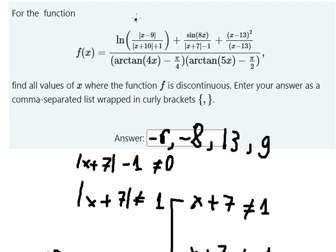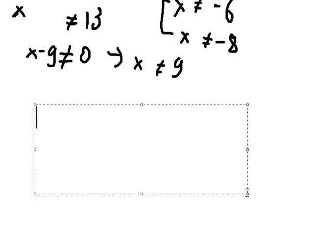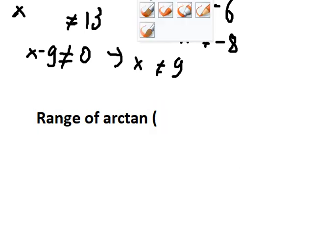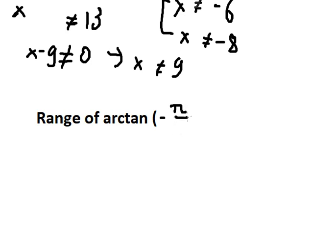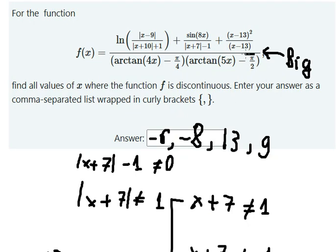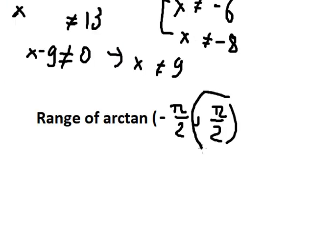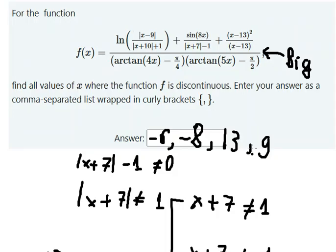The next one is a big fraction, so we cannot divide by zero either here or in the denominator. We need to know the range of arctan, which is from negative π over two to positive π over two — open interval. That means the arctan value is always strictly between those bounds, so the denominator here can never equal zero from that part.